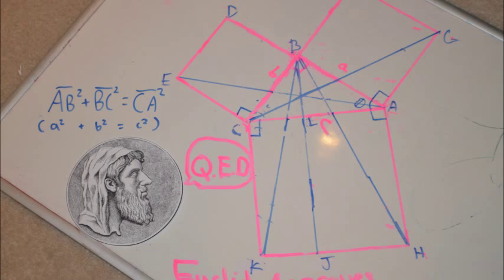So that means square EDBC plus square BFGA equals rectangle CLJK plus rectangle LAHJ, or square GAHK. This shows that AB squared plus BC squared is equal to CA squared — in other words, the Pythagorean theorem. This concludes the proof and always QED.